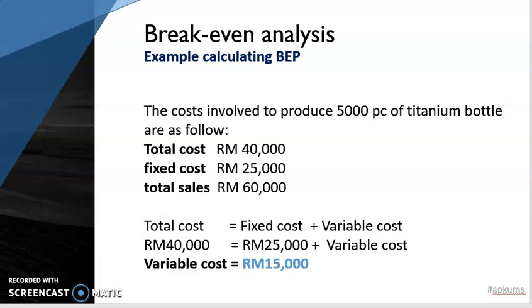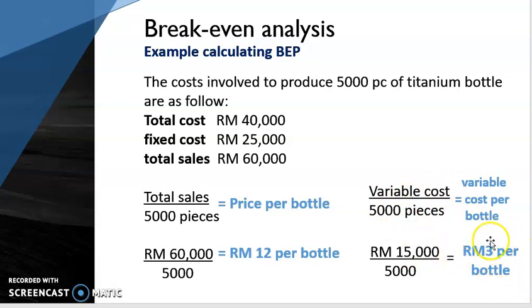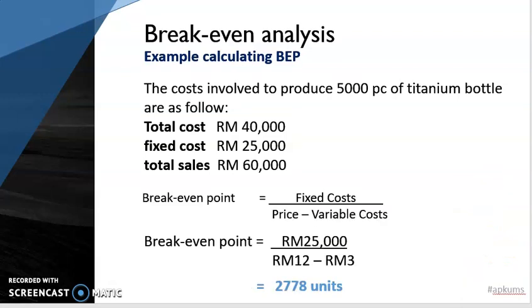Next, we need the price and variable cost per unit. To calculate the price per unit, we take total sales divided by the number of bottles, giving us 12 ringgit per bottle — this is the selling price. To find the variable cost per unit, we take the variable cost divided by 5,000 units, giving us 3 ringgit per bottle. Finally, the break-even point equals fixed cost divided by price minus variable cost, which equals 2,778 units.